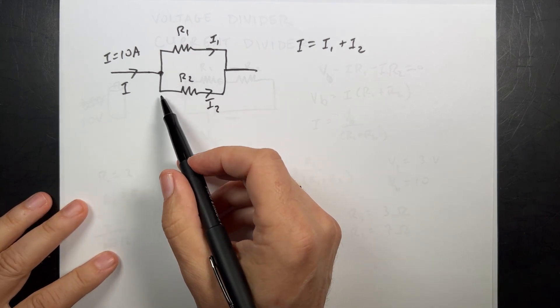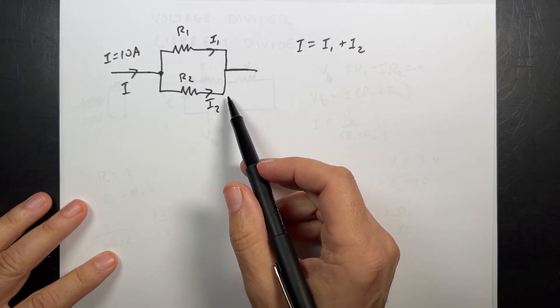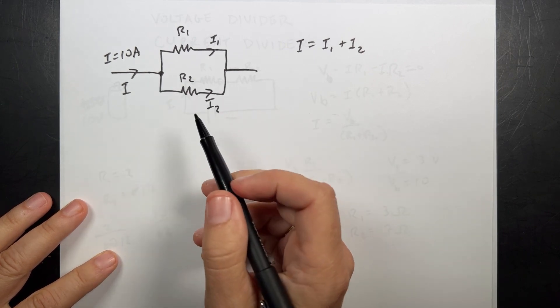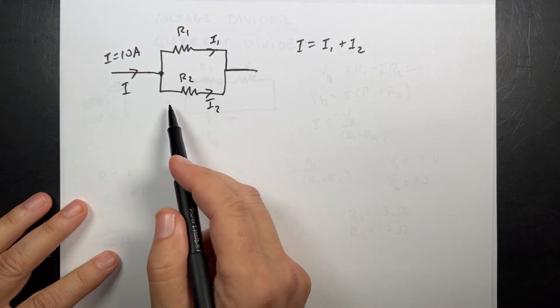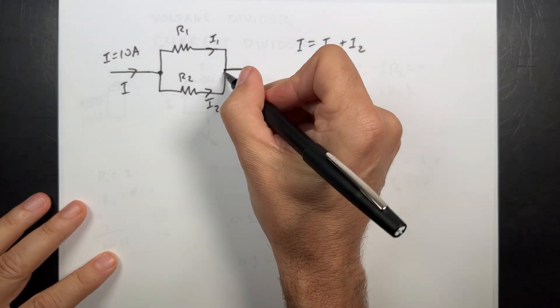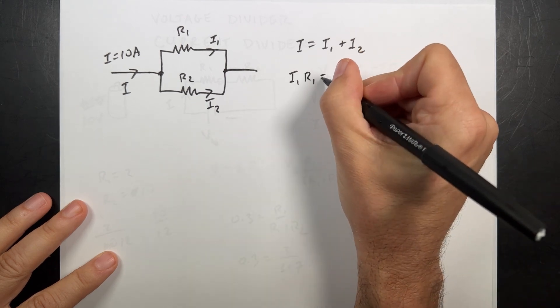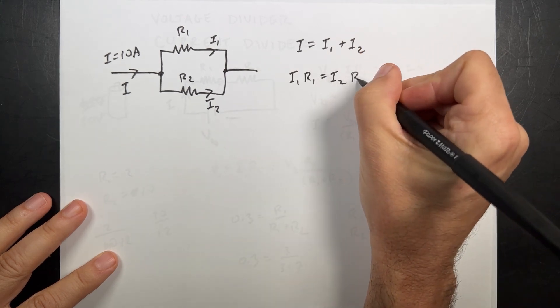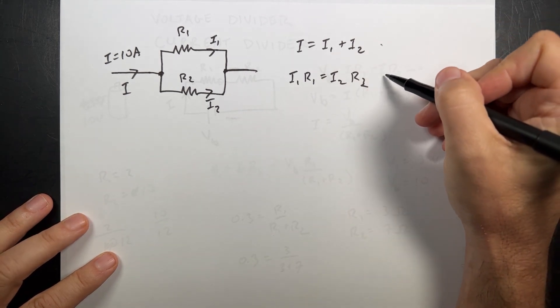I also know the loop rule is true. So if I go around this loop, the voltages have to add up to zero. One way to write that is to say the voltage across this and the voltage across this have to be the same because they have the same endpoints. So I can write this as I1 R1 equals I2 R2. So that's the junction rule, that's the loop rule.